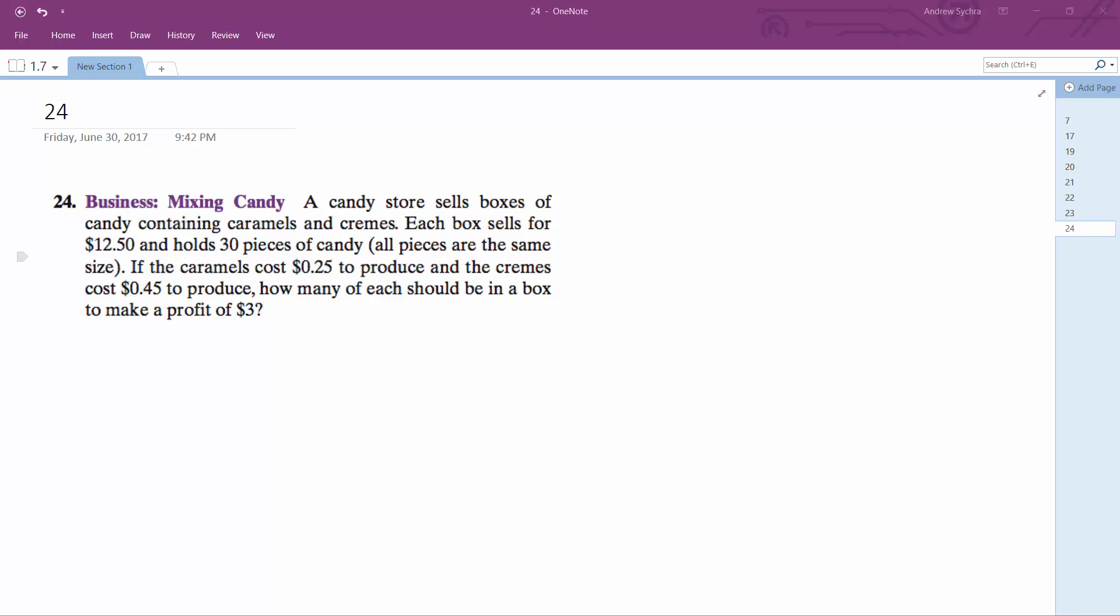So we've got a box, it's got 30 pieces of candy in it, and we need to figure out how many of each kind we need in order to still make a profit of $3.